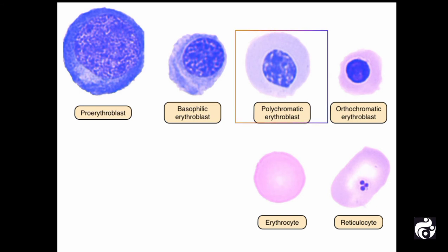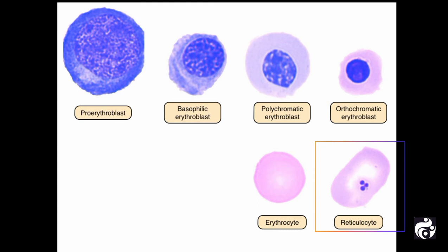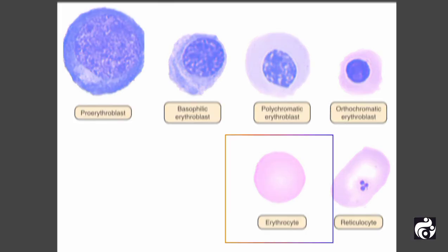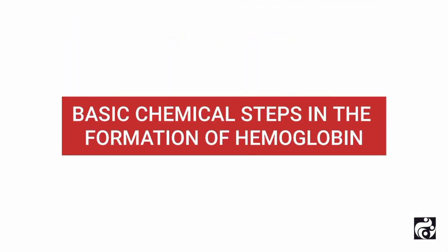Synthesis continues even into the reticulocyte stage of the red blood cell. Therefore, when reticulocytes leave the bone marrow and pass into the bloodstream, they continue to form minute quantities of hemoglobin for another day or so until they become mature erythrocytes. Now let's see the basic chemical steps in the formation of hemoglobin.